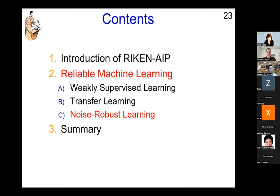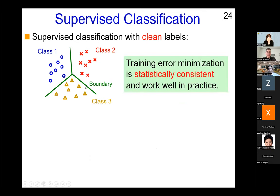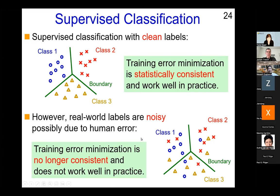Now the noisy labels part — let's go through this briefly. In standard supervised learning with clean labels, standard machine learning works well. But in reality we often have noisy labels due to human error. We can show that training error minimization — standard training — is no longer statistically consistent with noisy labels. Even with infinitely many noisy data points, the solution is not optimal. We need an explicit mechanism to correct the predictor when trained from noisy labels.